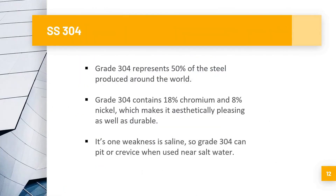SS 304 represents 50% of all stainless steel produced around the world. Grade 304 contains 18% chromium and 8% nickel, which makes it aesthetically pleasing as well as durable. One weakness is that it is susceptible to saline environments — grade 304 pits or corrodes when used near salt water, so it should be avoided in such conditions.